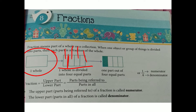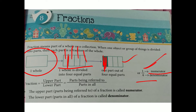Total parts are 1, 2, 3 and 4. And this is the shaded part: 1. Total parts we write down as the denominator. The shaded part — we write 1 — comes up as the numerator. So the upper part means the numerator, and the lower part shows the denominator.